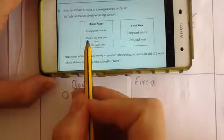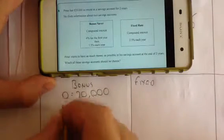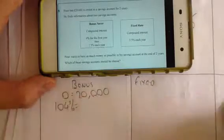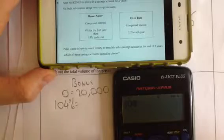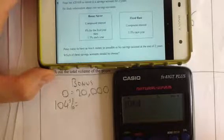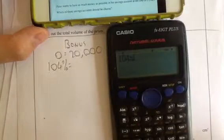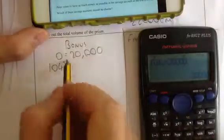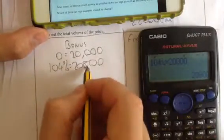Now for Bonus Saver, he gets 4% for the first year. You can work out 4% and add it on, but I'm actually going to work out 104% of 20,000, because 100 would be the original amount. So 104, I have a percent button which is above my bracket there, times 20,000. And my first year is actually going to be £20,800.